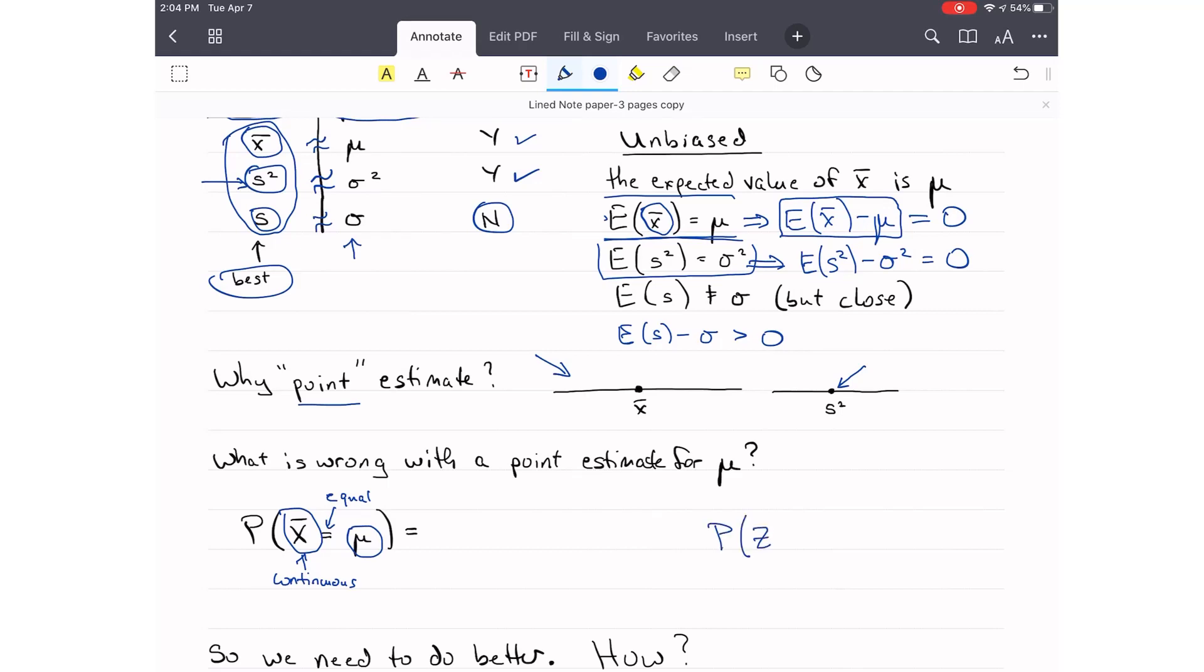What's the probability that z is equal to some value a? Most of you answered correctly and said this is equal to zero because there is no area. It's just a line. This is the same answer. The probability that x-bar is actually equal to mu is zero.